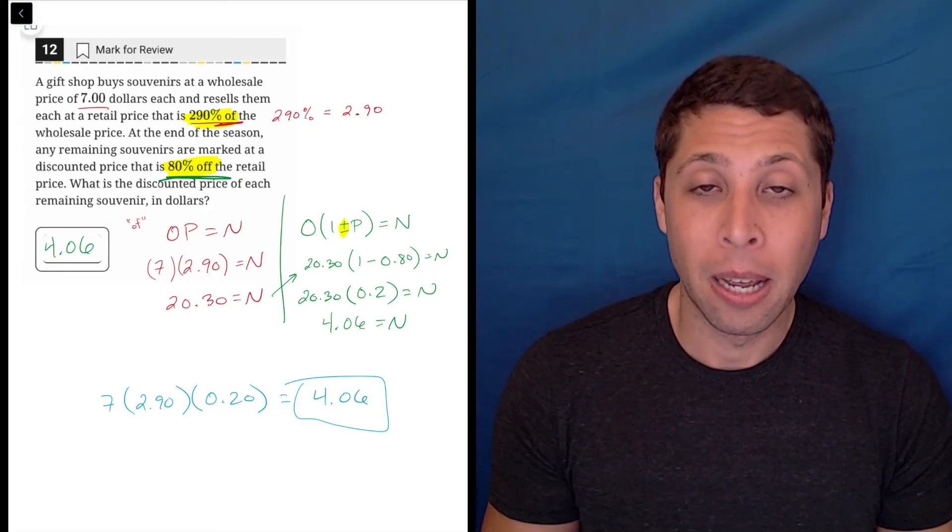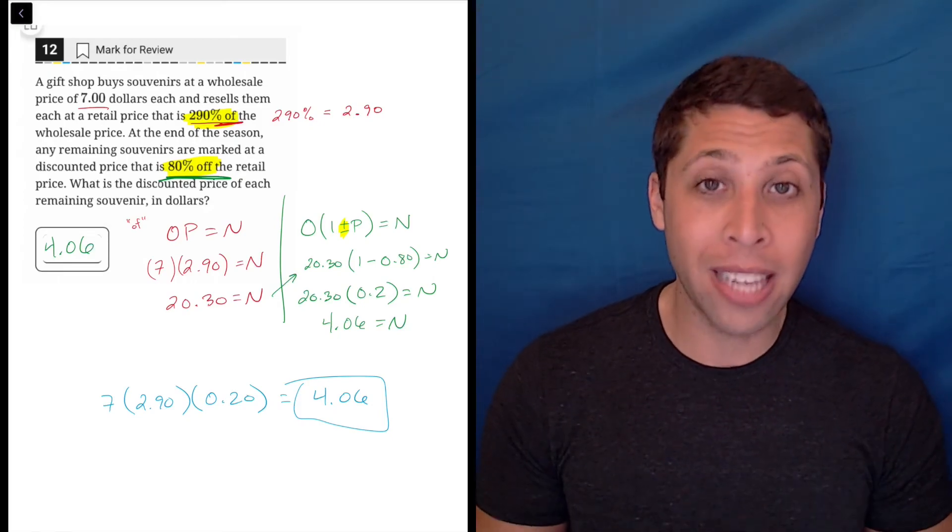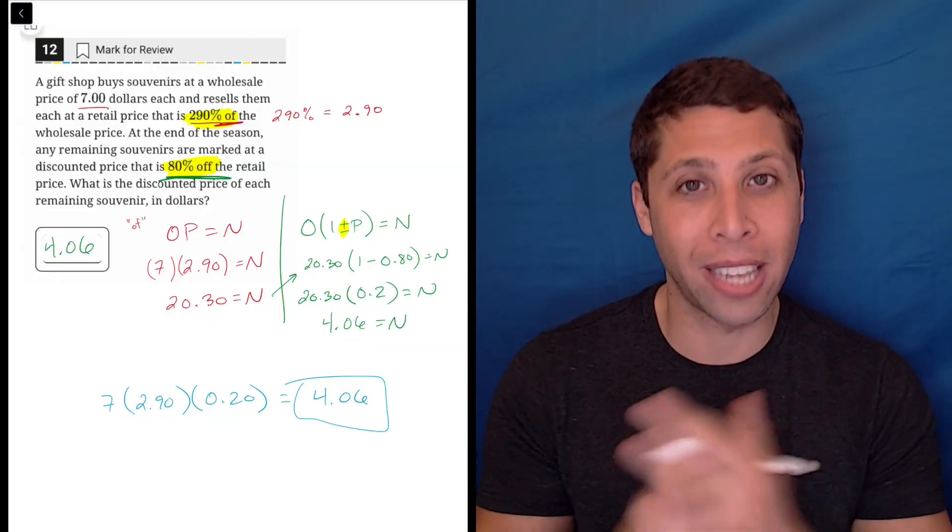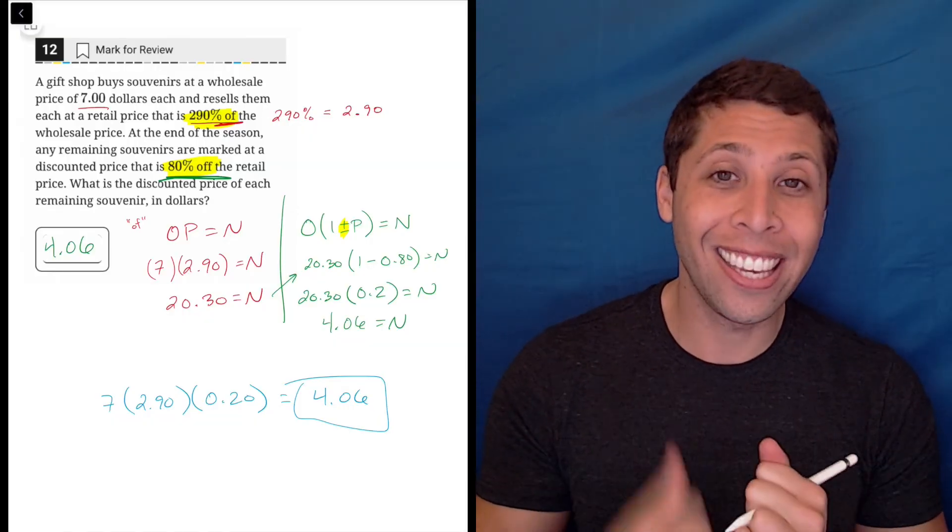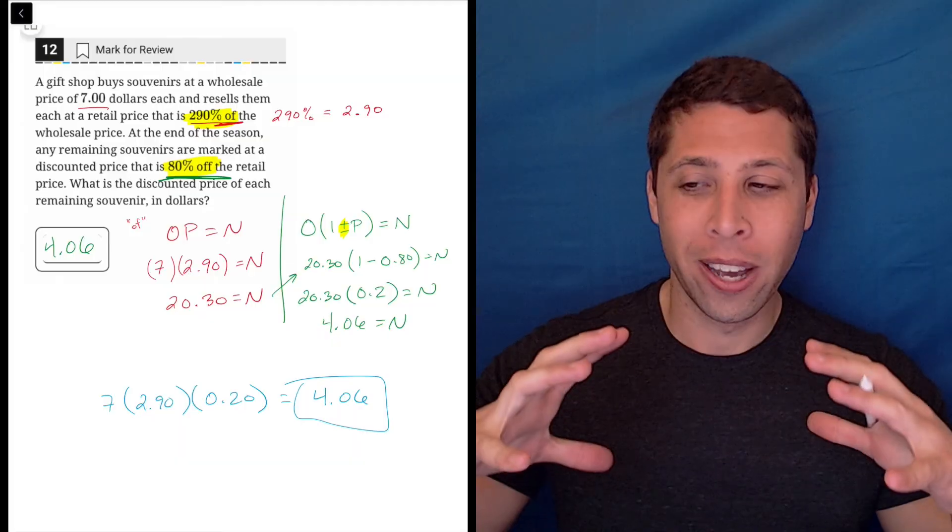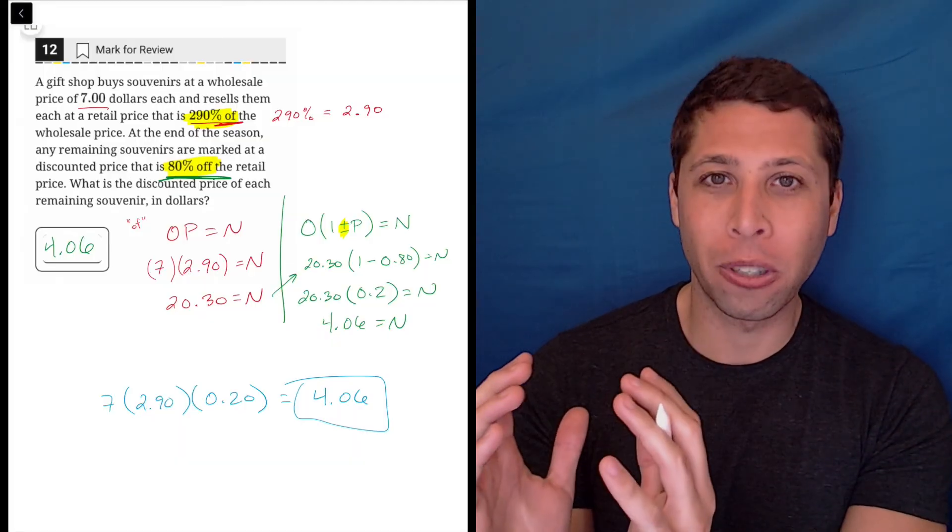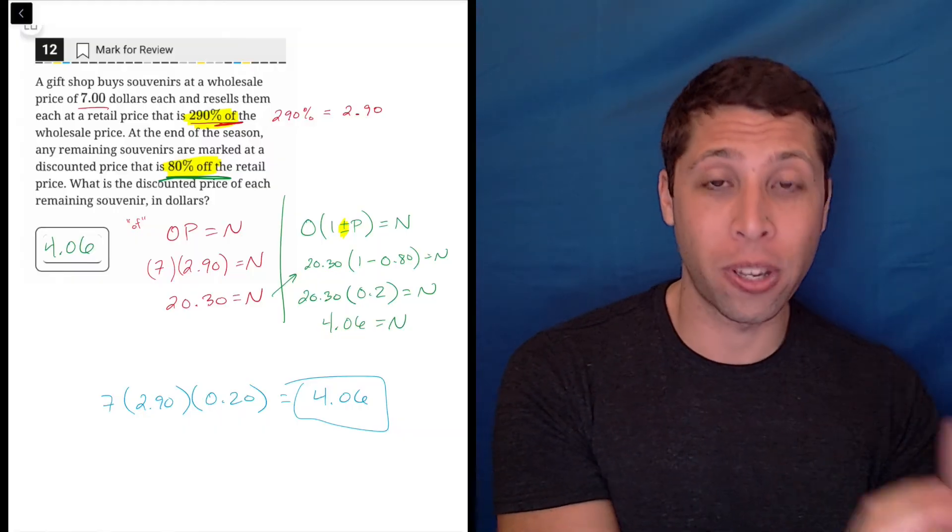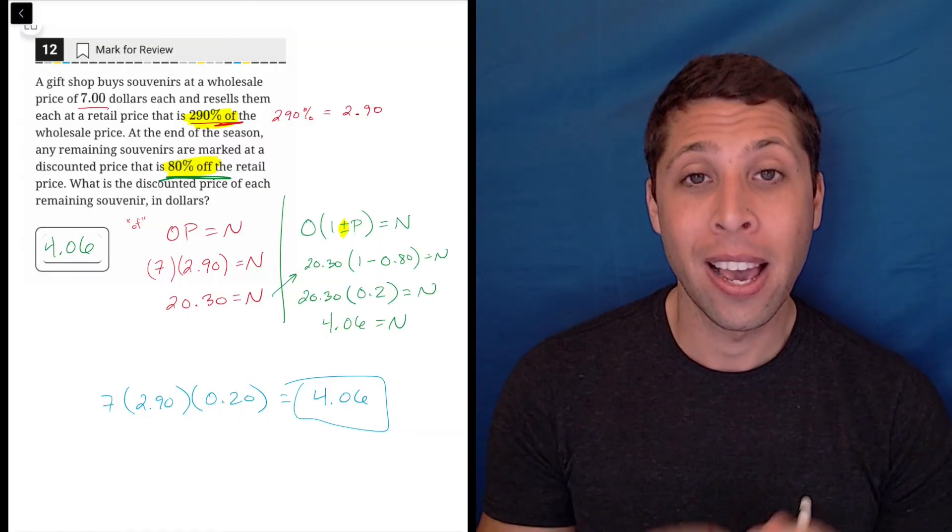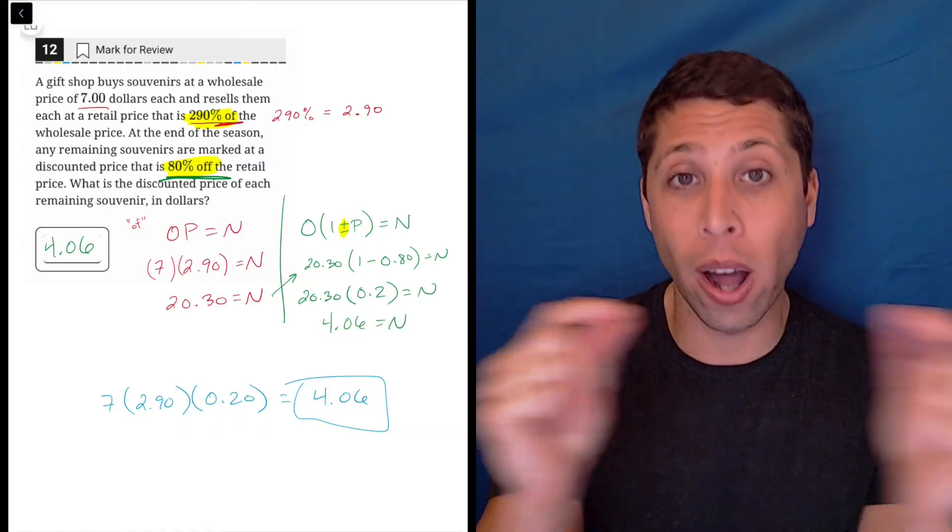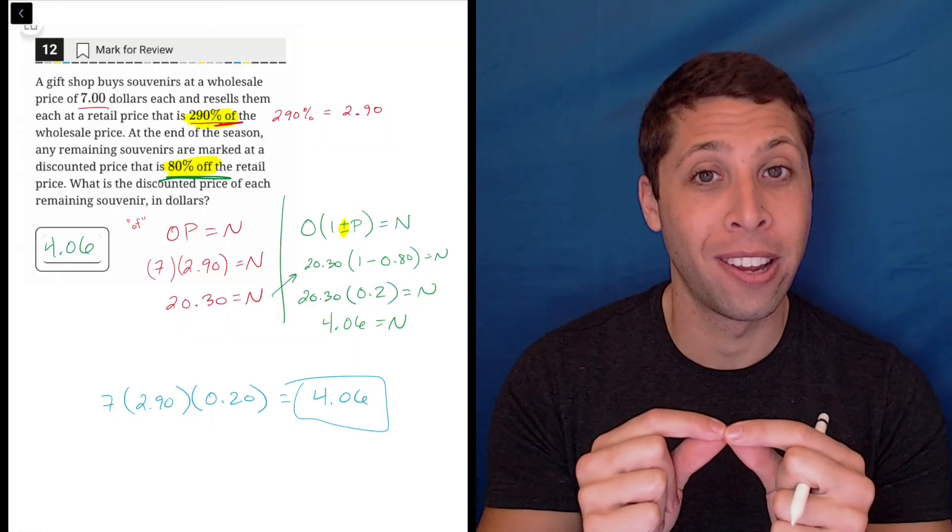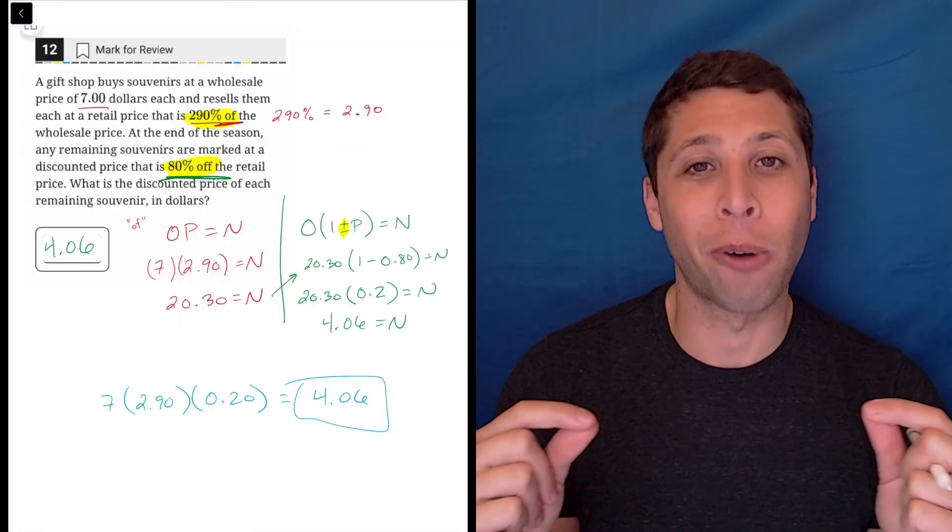But yes, in this case you could do them together. In most cases, you could do them together, even if they're different percentages. The key is you just got to make sure that you capture that percentage the right way, either as just a standard percentage or as a change in percentage using this one plus or minus P. That's how the SAT gets us. They want us to confuse those situations, and if you do, you're going to get the wrong answer.